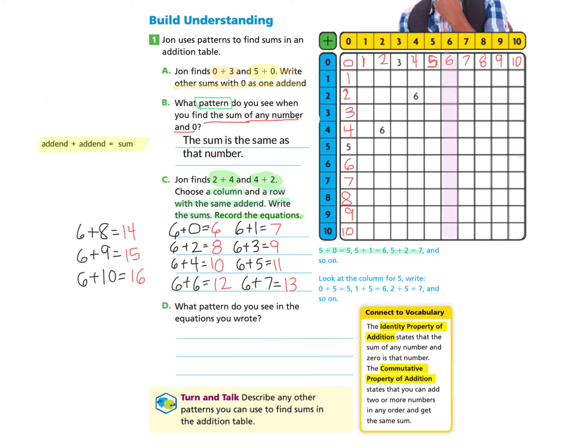So I'm going to do 6 plus 0 is 6, which is already written. Then I'm going to just add 6 plus 1, which is 7. And I'm just going to enter in all of the information on the column like so. And then I'm going to do the same thing on the row. And then I've now completed my row.